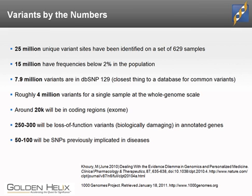On a single sample level, you might expect to find 4 million variants on a whole genome scale, and at a whole exome scale, maybe about 20,000 variants. Of those, 250 to 300 will be loss-of-function variants if you get down to the biological significance of every single one, and 50 to 100 of those will probably have been implicated in previous diseases. This is just to give you an idea of the fact that it's not just about retrieving variant information from your core labs or sequencing provider — there's much work to be done in filtering through those variants and putting them into the context of your study.